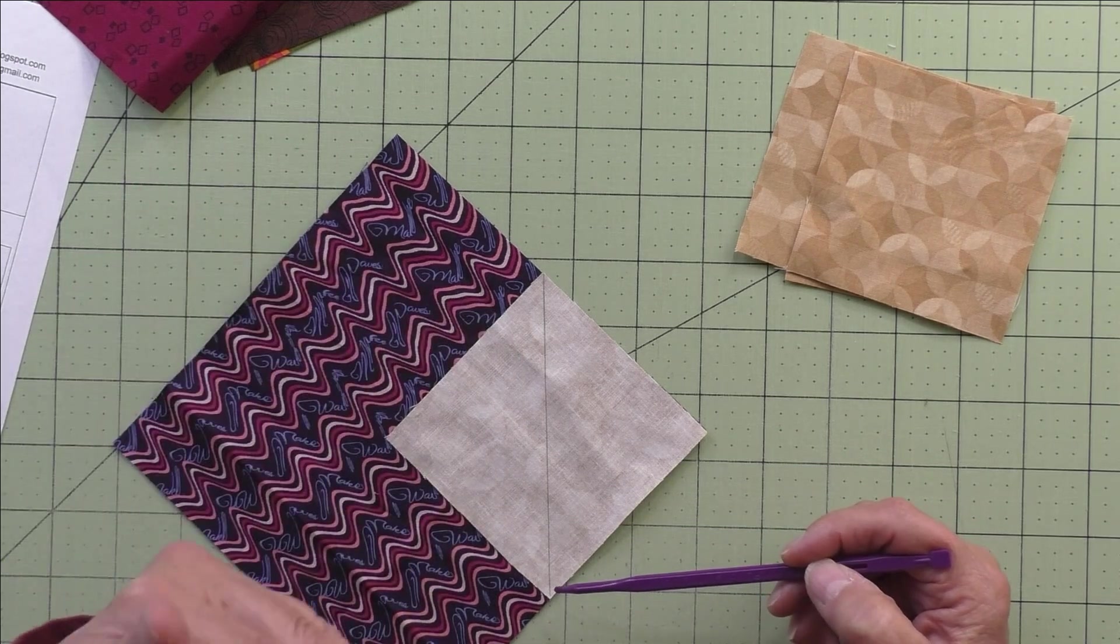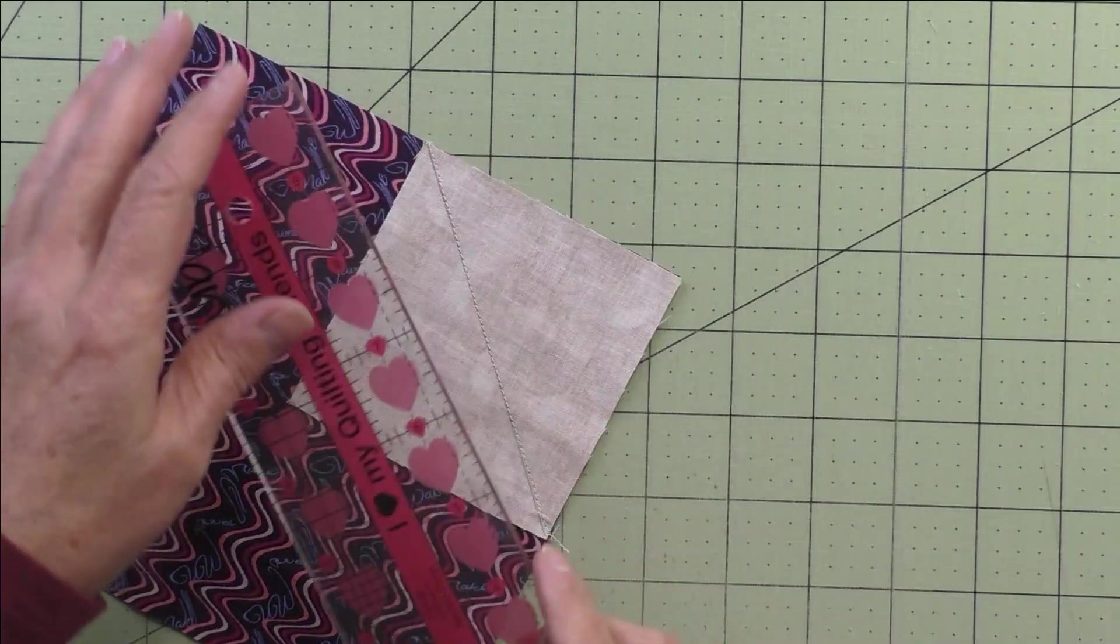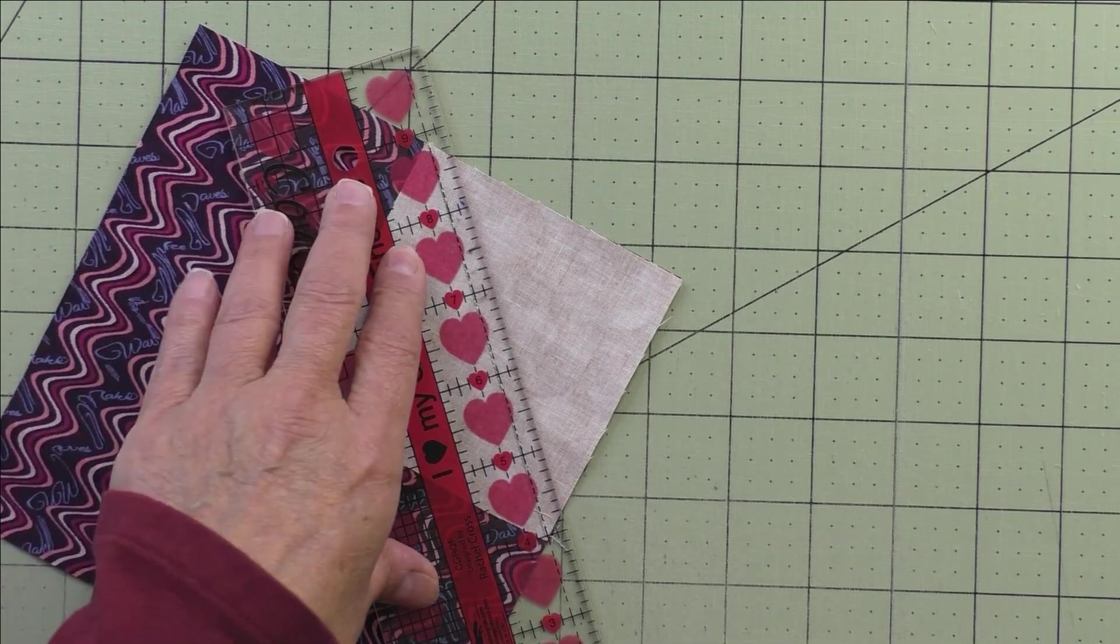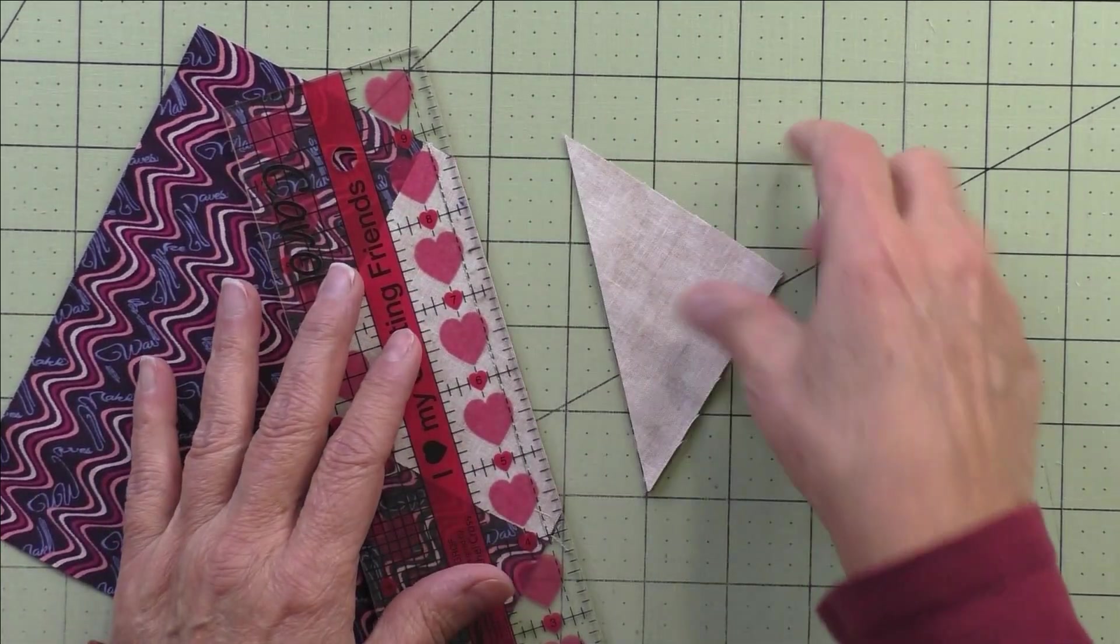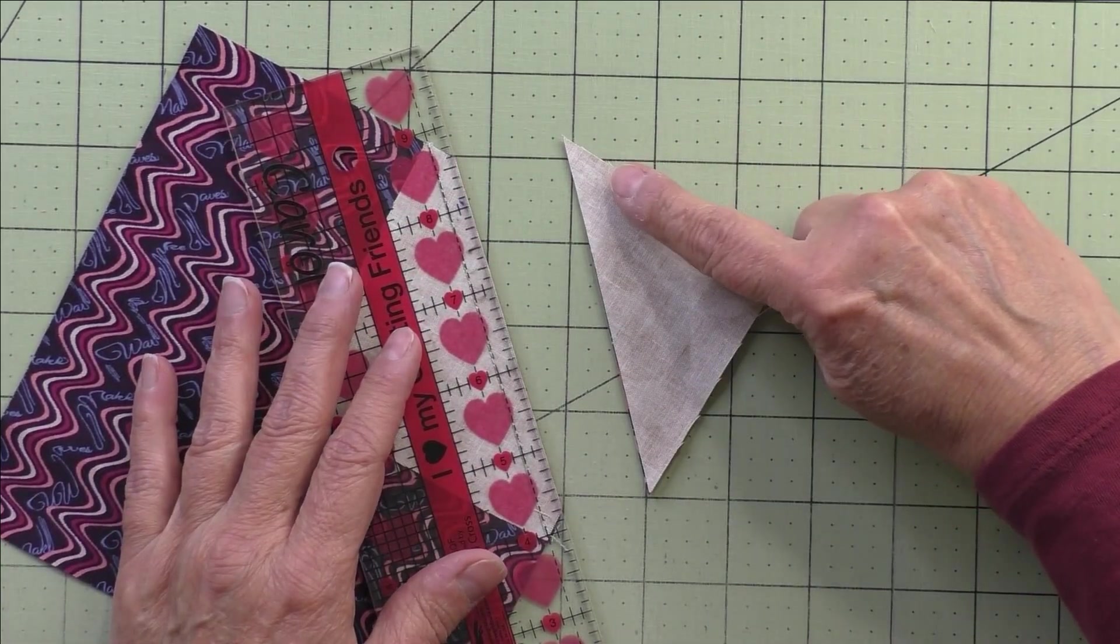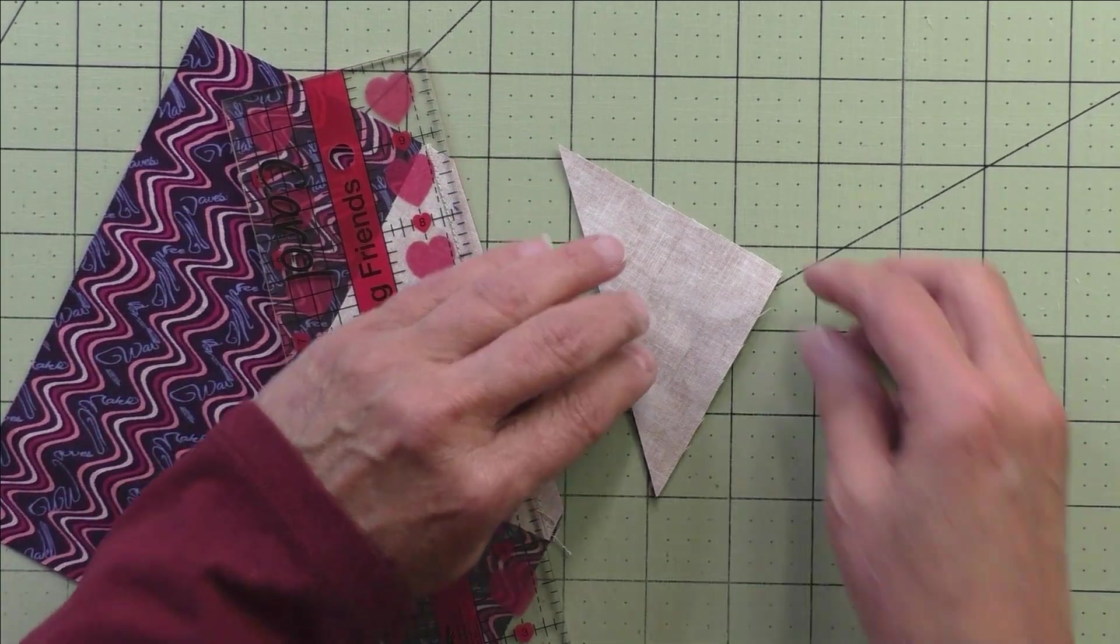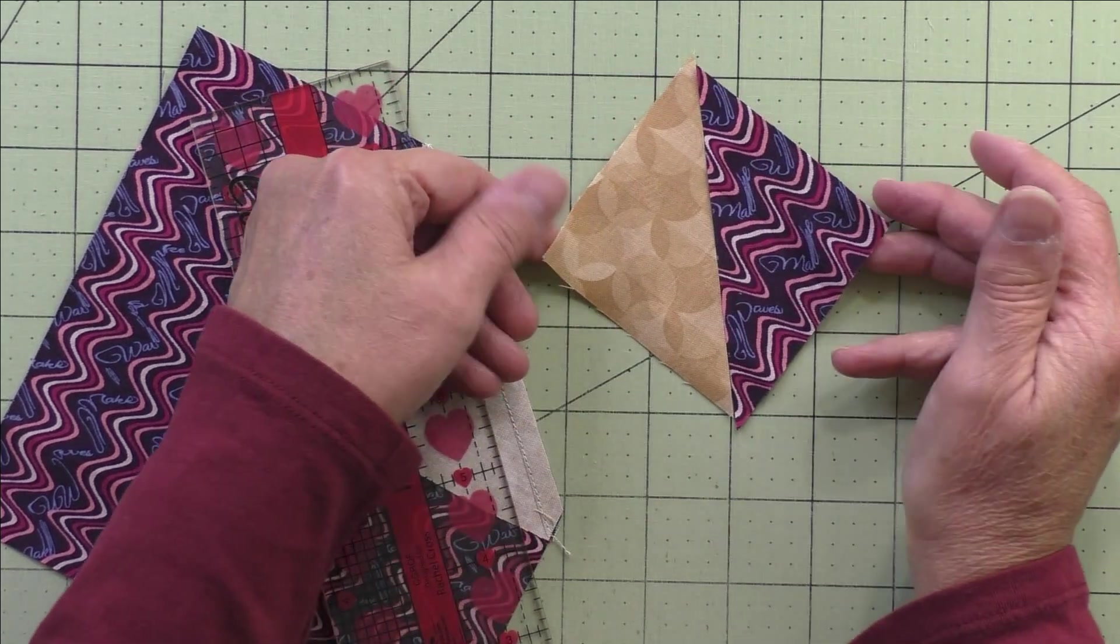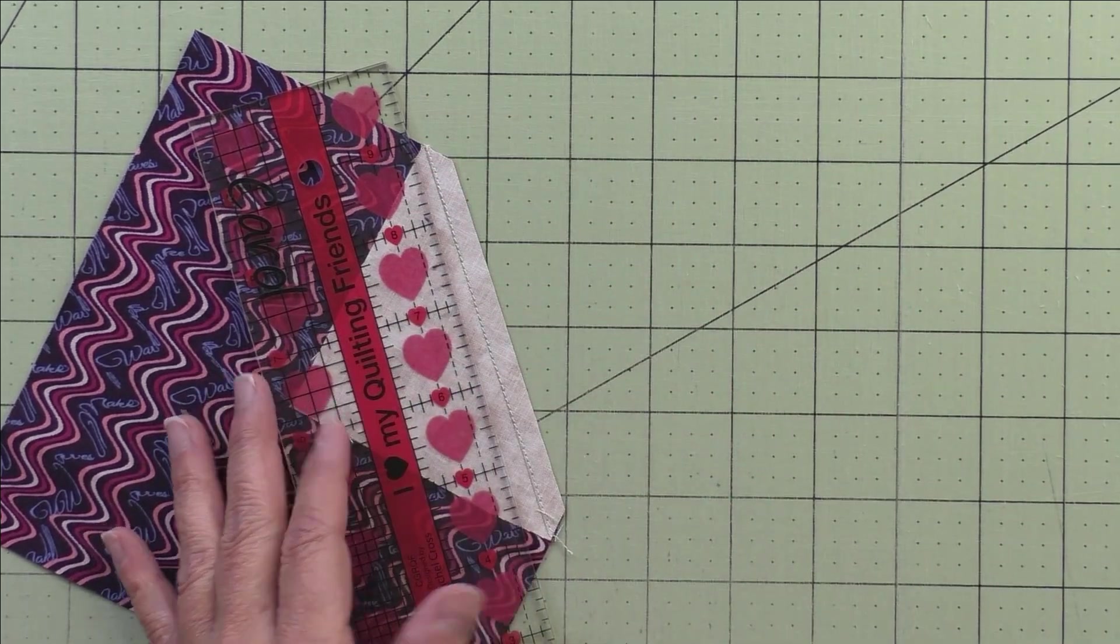Once you've stitched, we're going to trim about a quarter of an inch away from the stitching line. This does not have to be exact. Now some people will take this half square triangle and before they cut it, they'll stitch another line of stitching here and it will give you another half square triangle, a smaller half square triangle. So you can do that if you don't like tossing away those things.